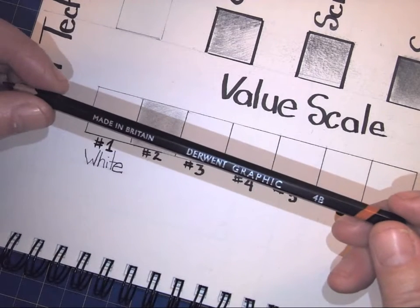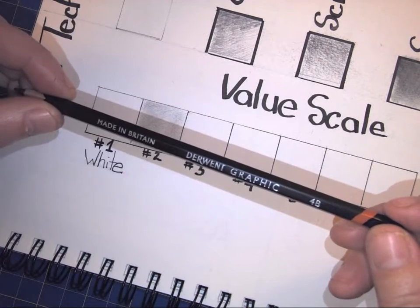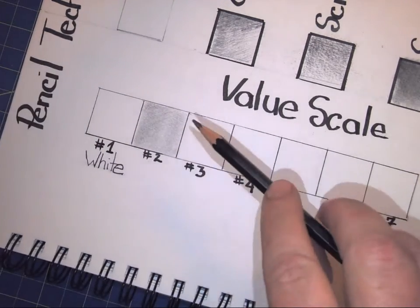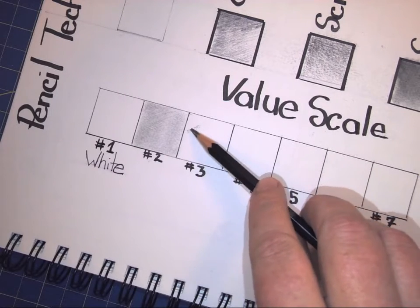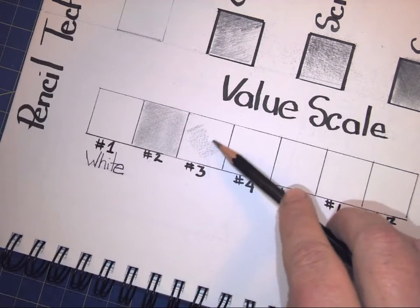I did it with a 4B pencil, which is what we're going to be using. A 4B pencil is much softer than most of the pencils we generally use. I am laying down some graphite now in square number three, which needs to be a little darker than square number two.